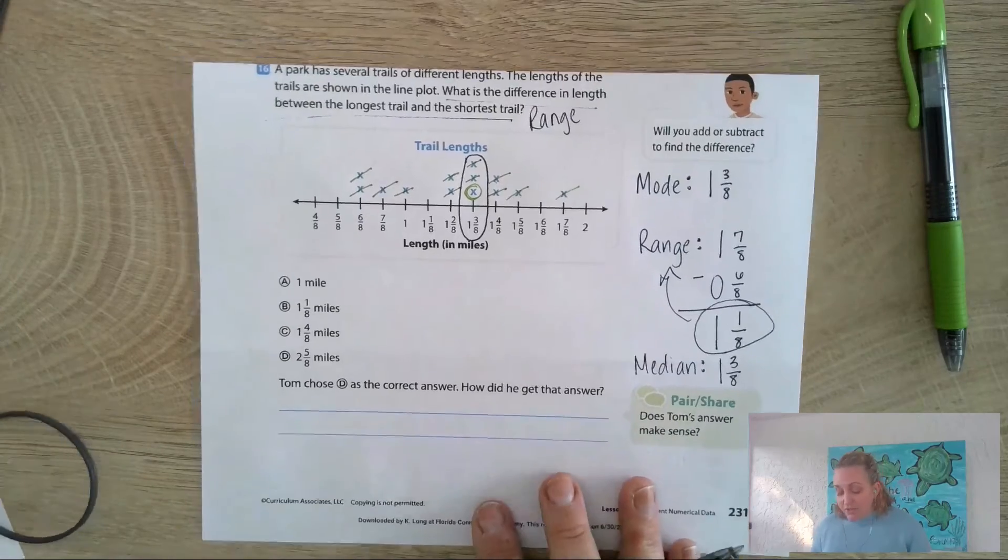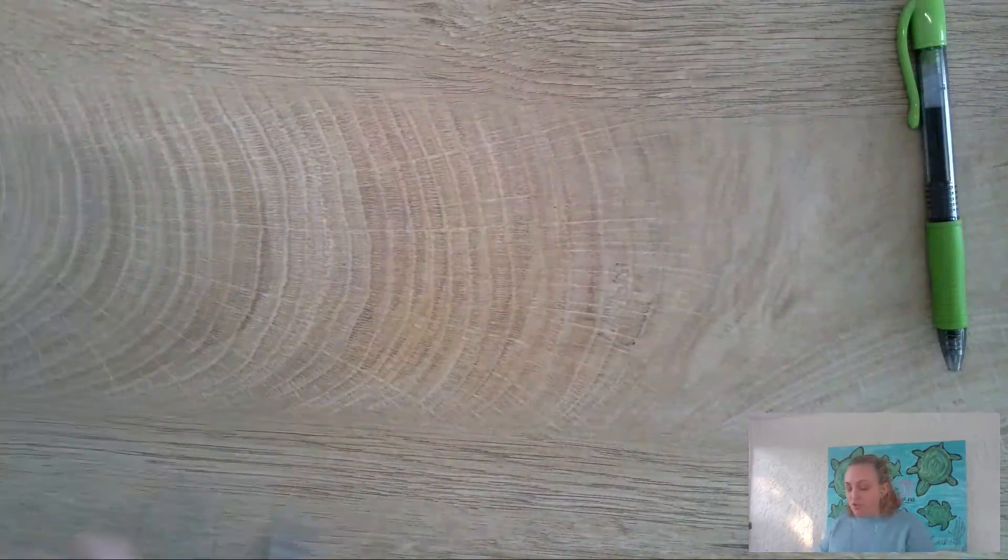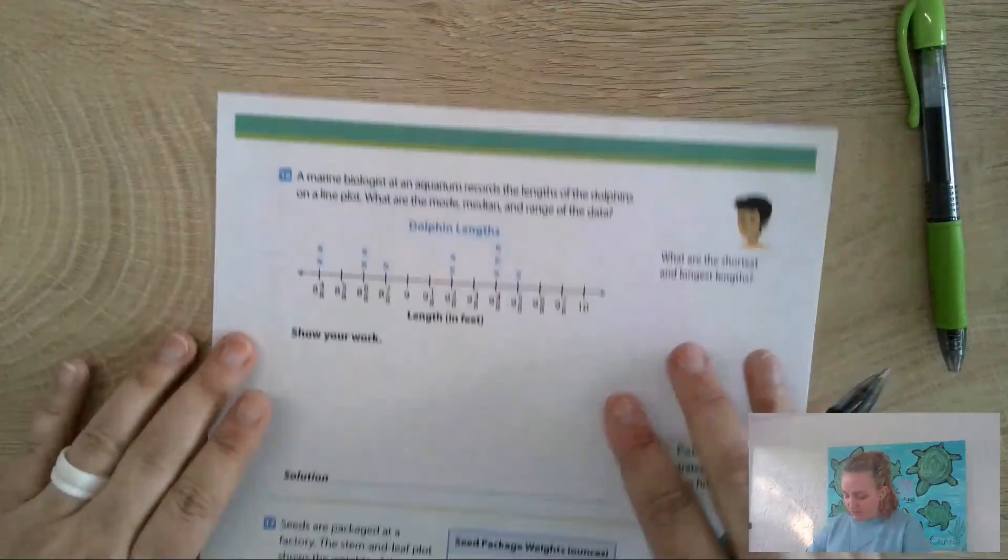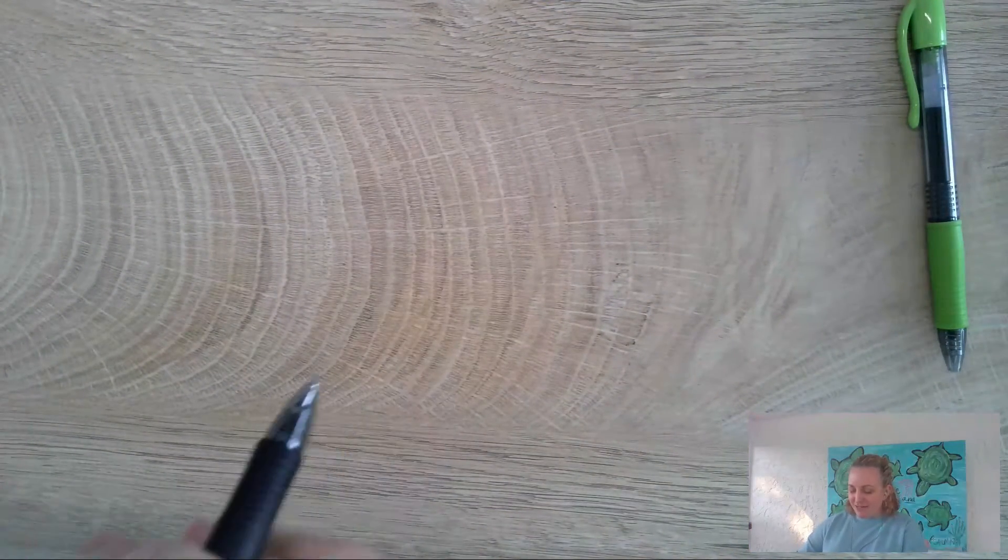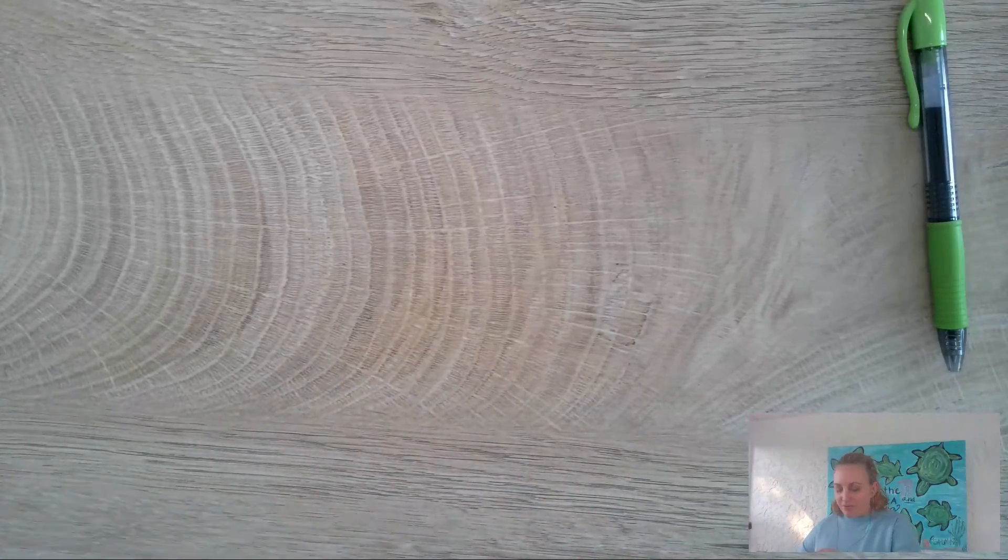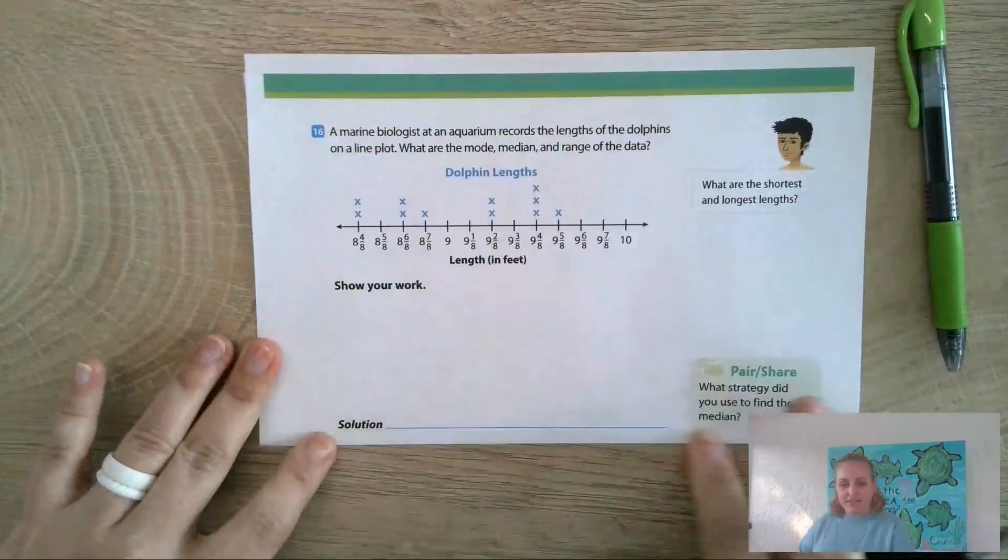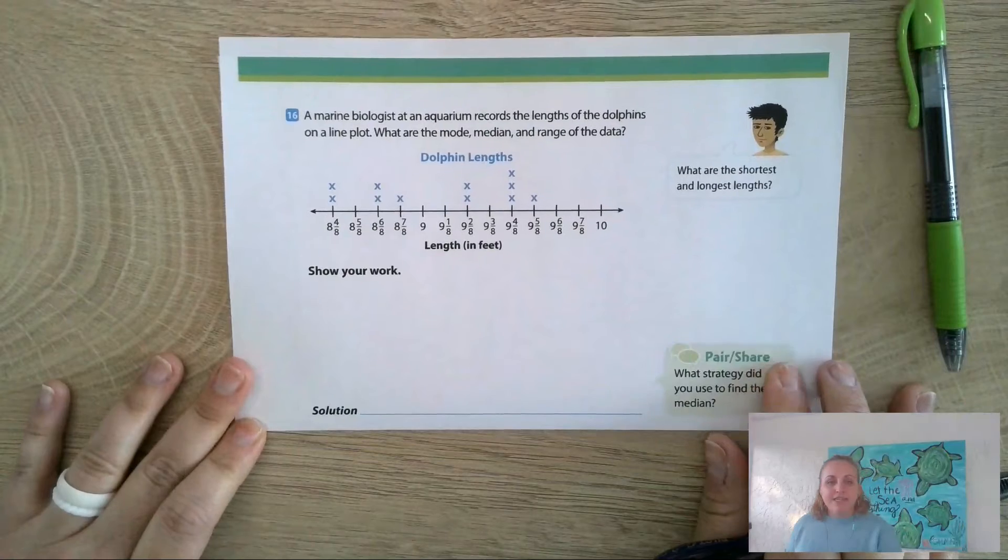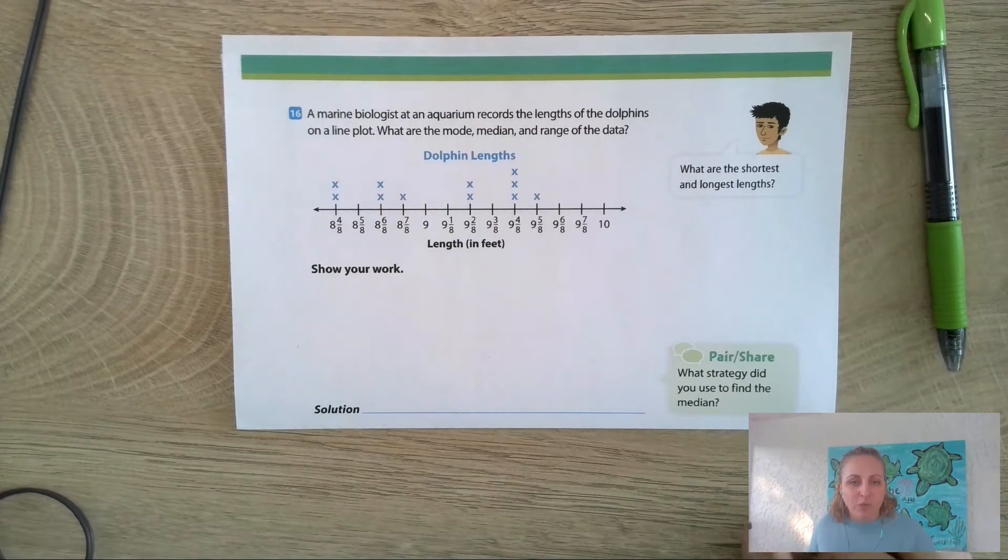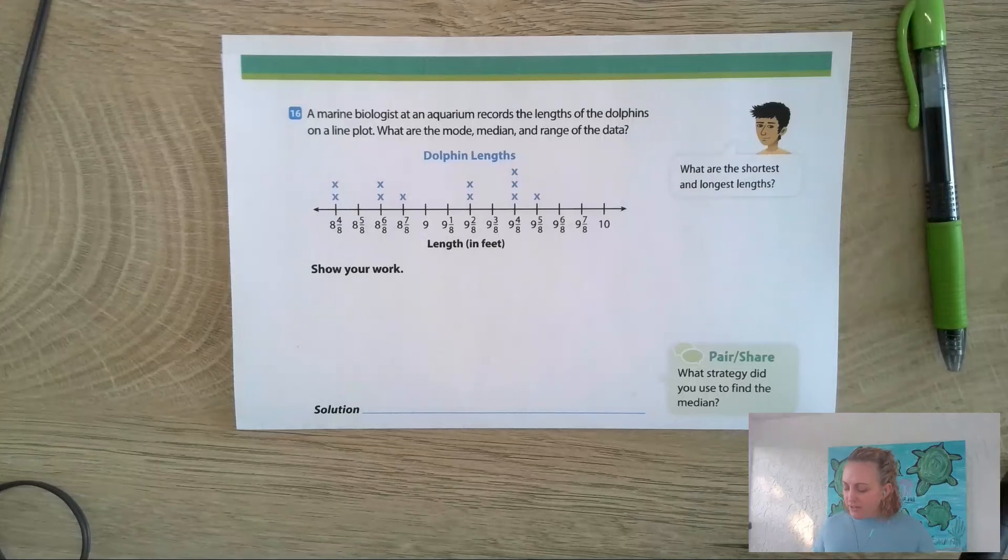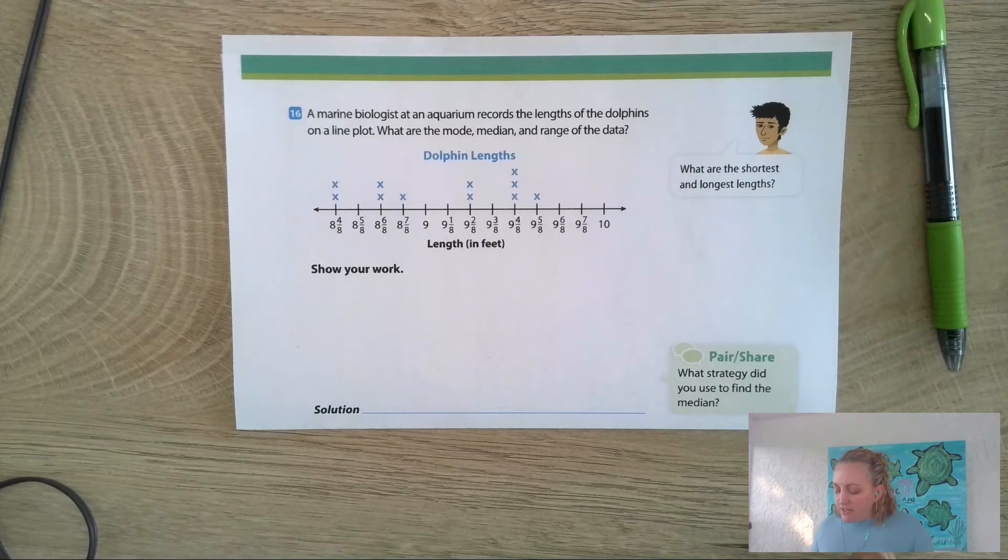Now I want you guys to try one. We're gonna go over it, so don't freak out, and we don't need to worry about the stem and leaf plot yet. That's tomorrow. This is dolphin lengths of dolphins in an aquarium, and we want to find the median, the mode, and the range of the data.